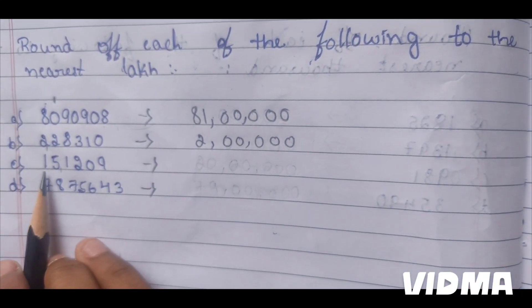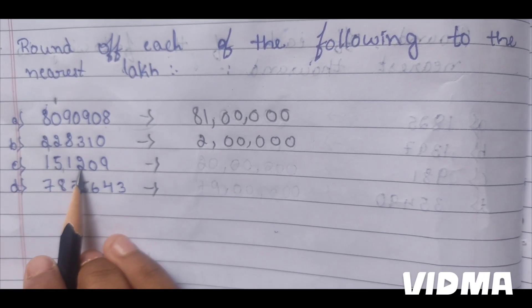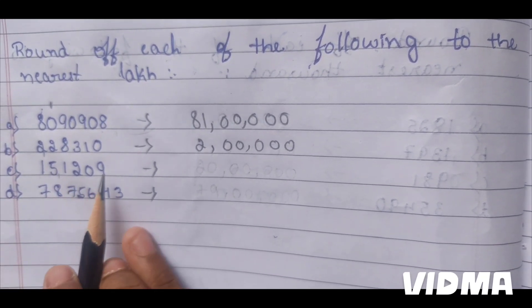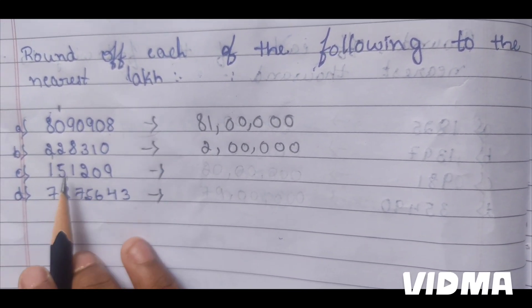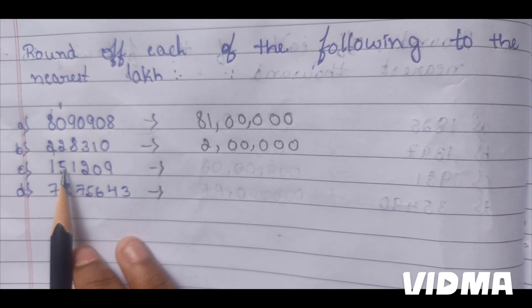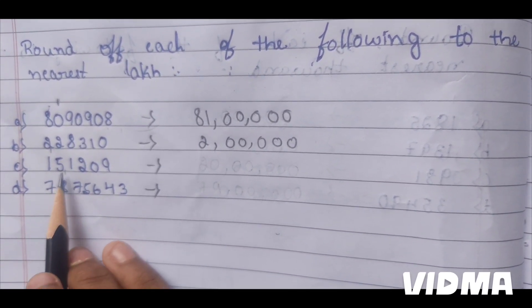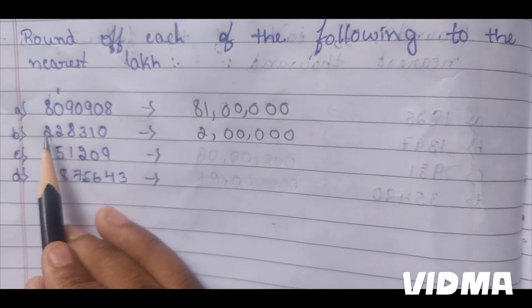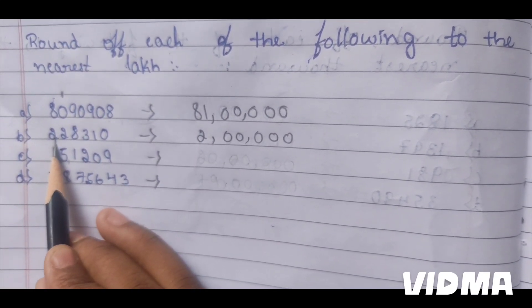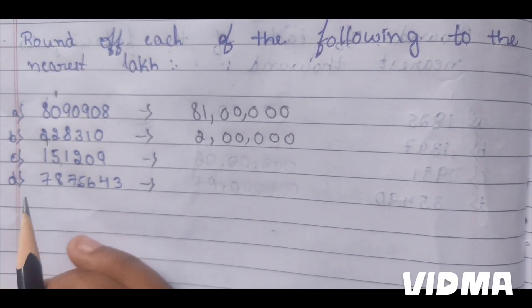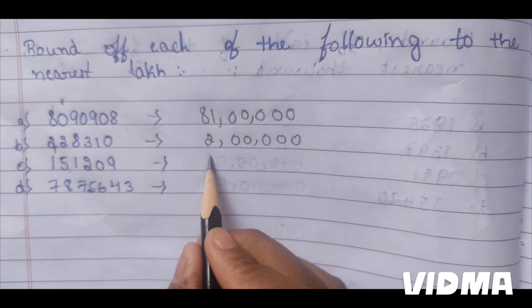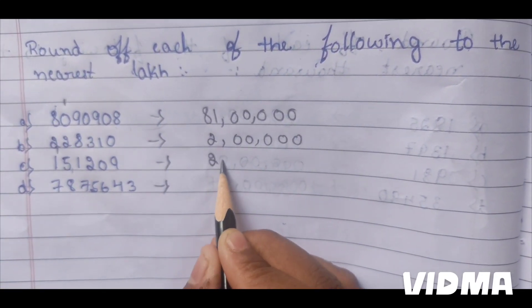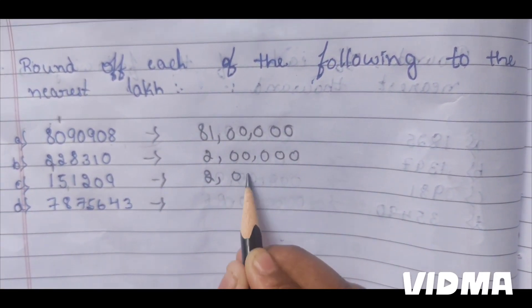Next, 1,51,209. Here in the 10,000 place, it is 5. So we have to add 1 to the lakh place. 2 lakh.